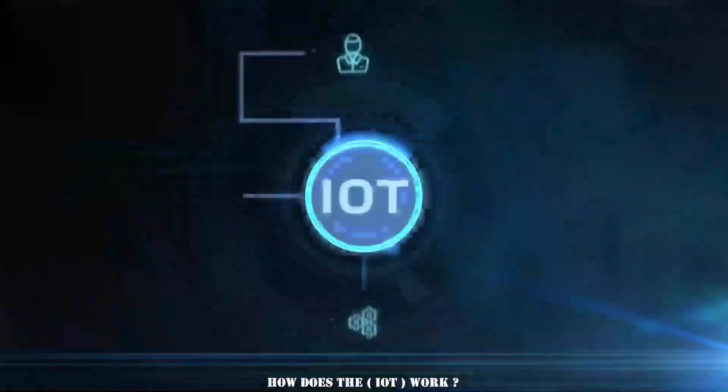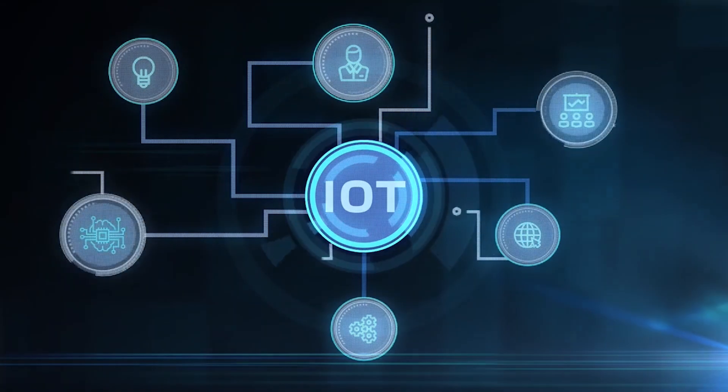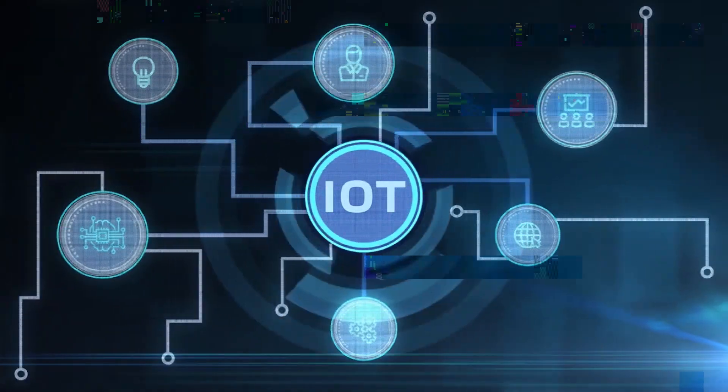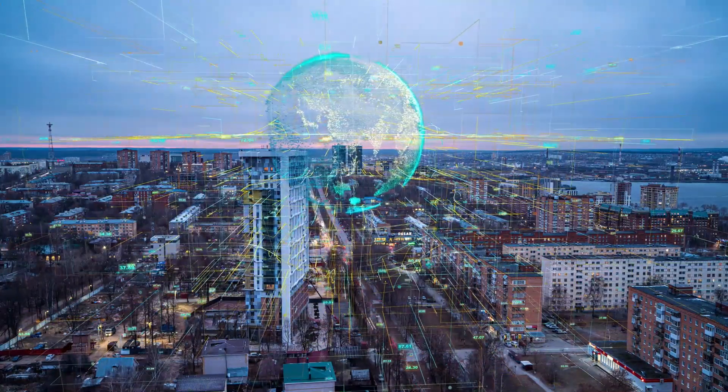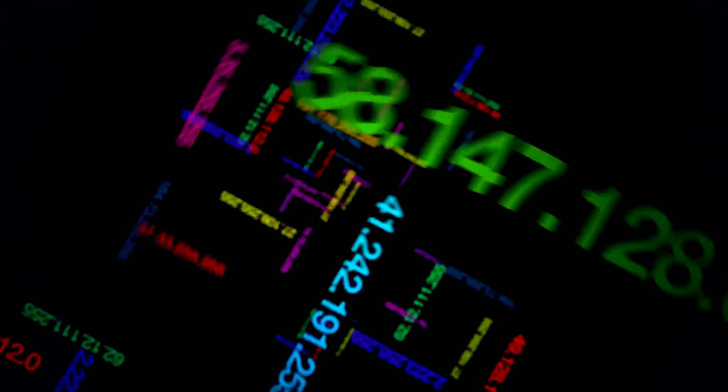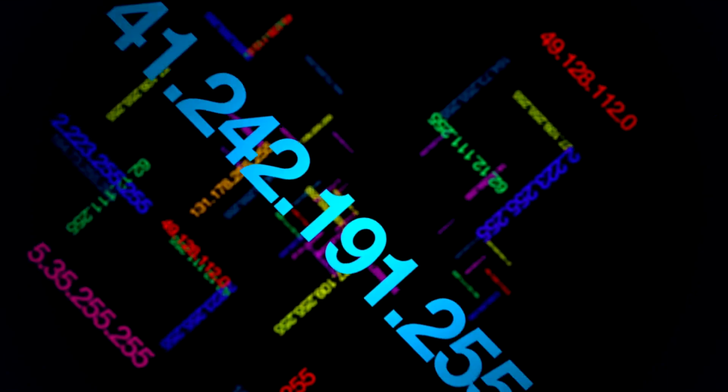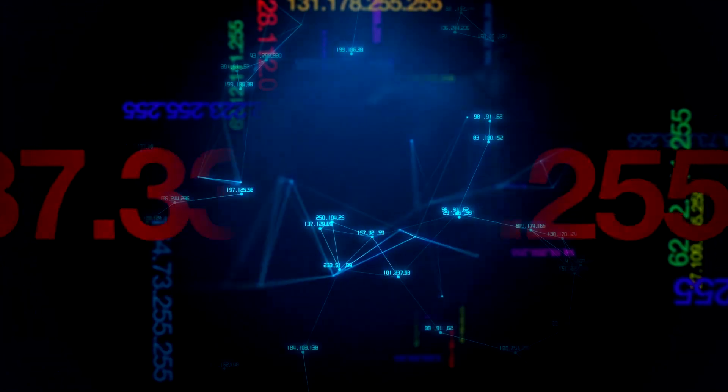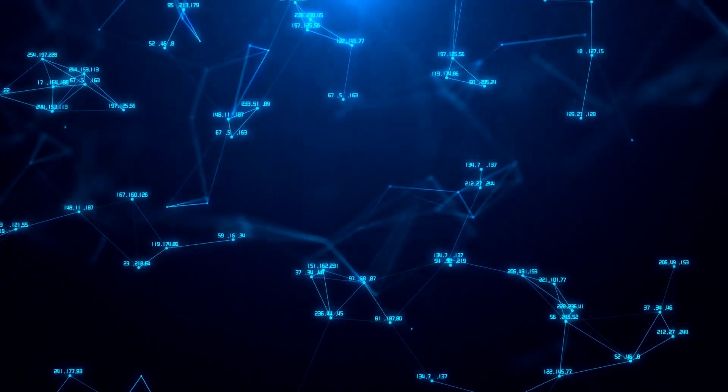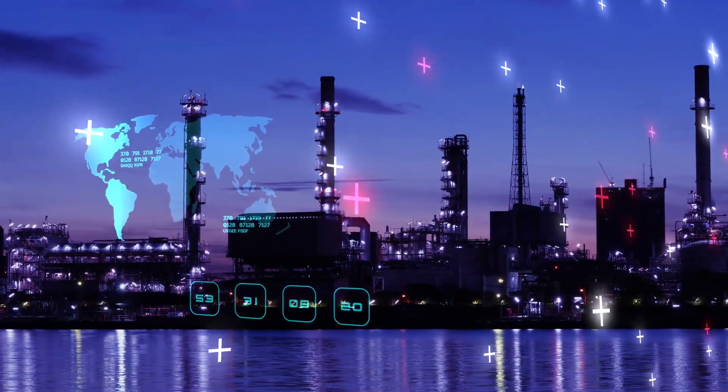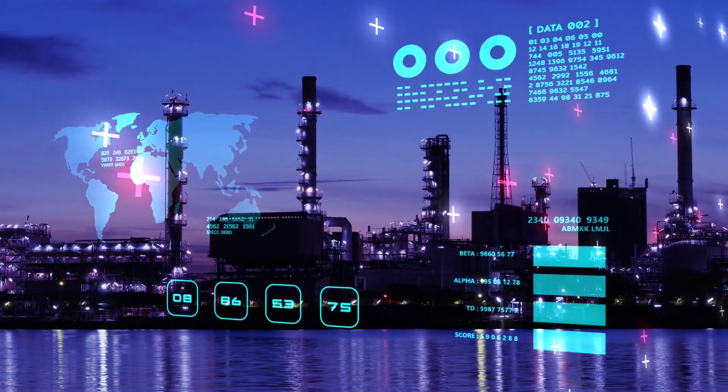How Does the IoT Work? The first element of an IoT system is the device that gathers data. Broadly speaking, these are Internet-connected devices, so they each have an IP address. In the next step in the IoT process, collected data is transmitted from the devices to a gathering point. Moving the data can be done wirelessly using a range of technologies or over-wired networks.